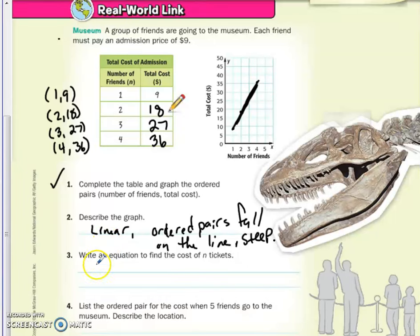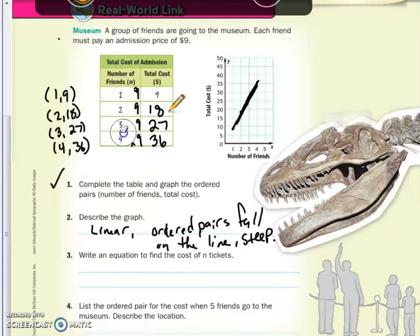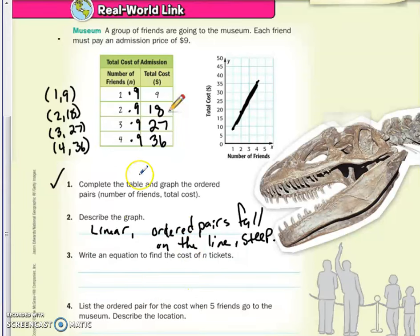Now, how do we write an equation to find the cost of N tickets? Well, let's go back to this. How do we go from our number of friends to the total cost? And we discussed that we're multiplying by 9 each time. And instead of writing the multiplication symbol like that, let's do it with a dot, okay? So the way we're going to multiply is whatever we get for N, we multiply by 9. So the equation is going to be the total cost is equal to 9N.